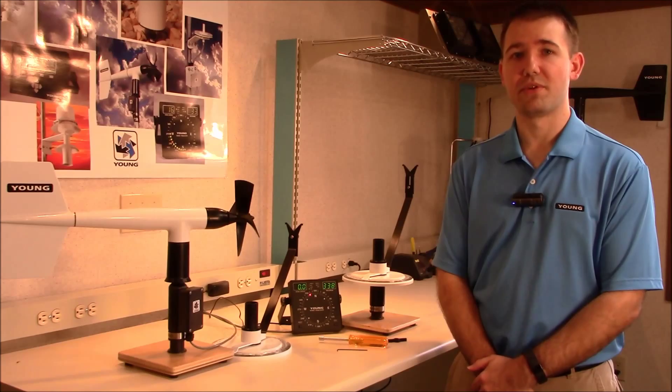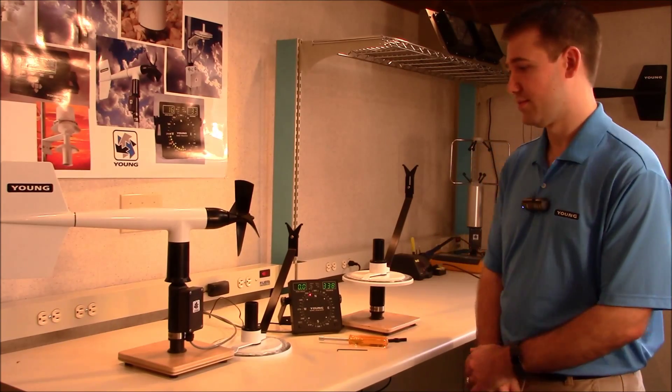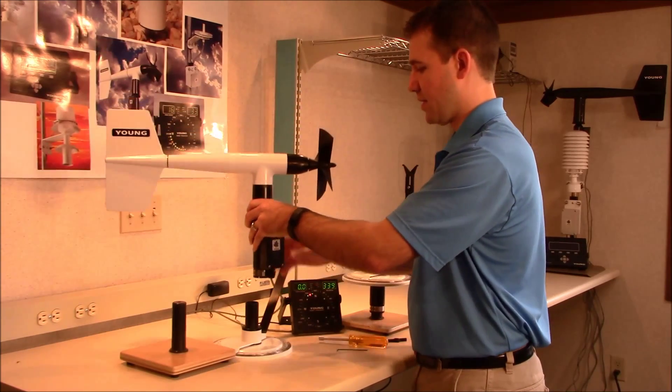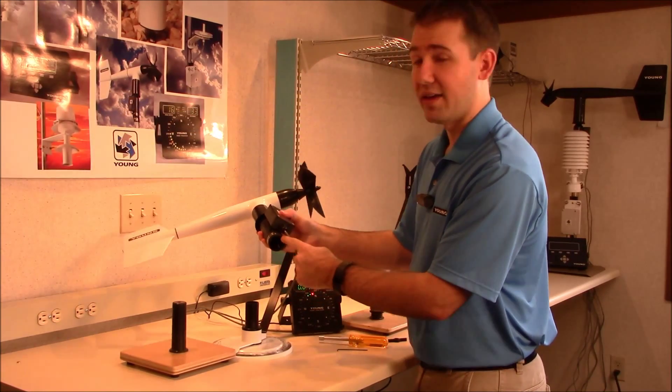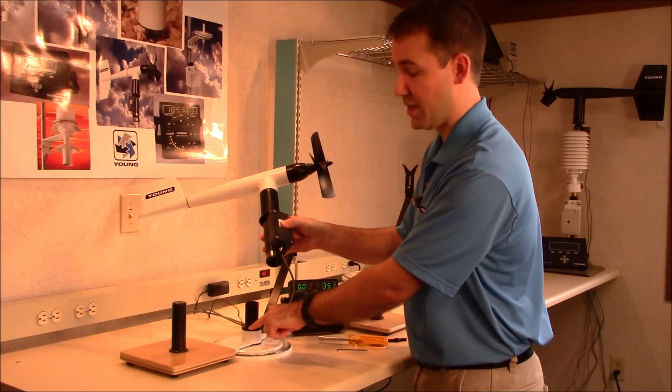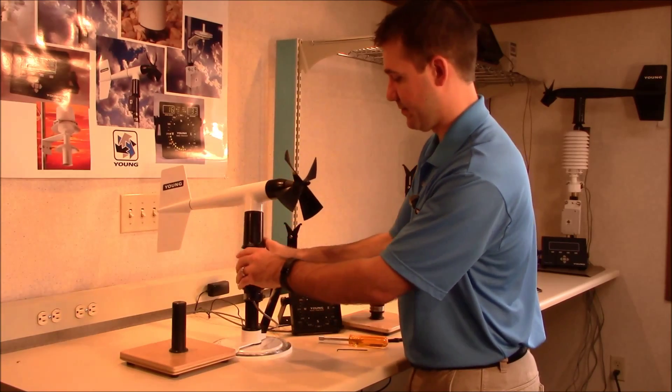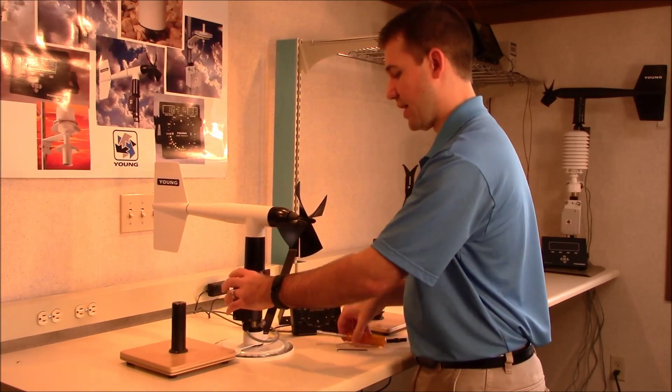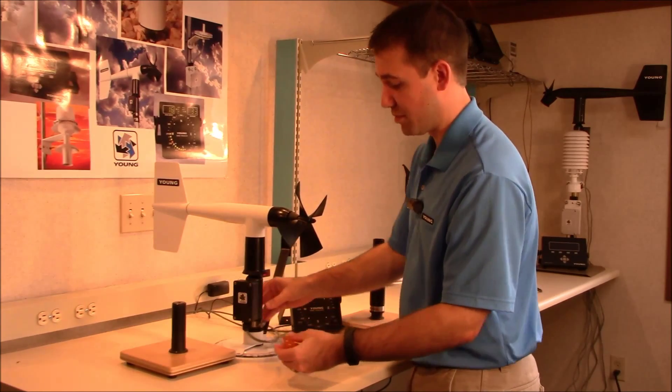First, we need to put the wind monitor on the fixture. Align the key in the mounting post with the key on the fixture, and then tighten the band clamp so it stays in place.